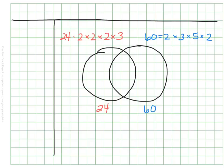I'll put numbers that are just factors of 24 on the left-hand side, numbers that are just factors of 60 on the right-hand side, and I'll use purple here to show the combination. The numbers that they share — the factors they share — will go in the middle. So if I look at this, 2 shows up on both lists, so I'm going to put a 2 in the middle.